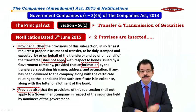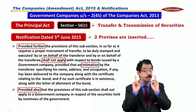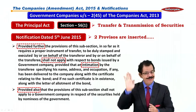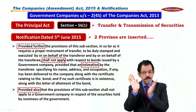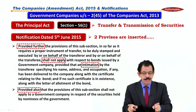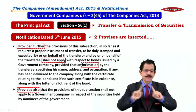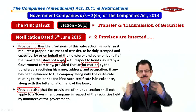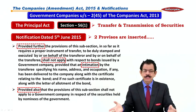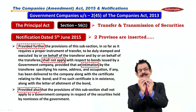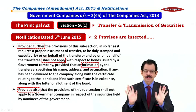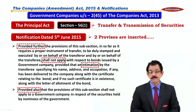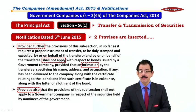So no instrument of transfer is required if it is a government company and the security is a government bond. Form SH-4 is not required. You simply need to intimate the Registrar — that's all. The provision shall not apply with respect to bonds issued by the government company.